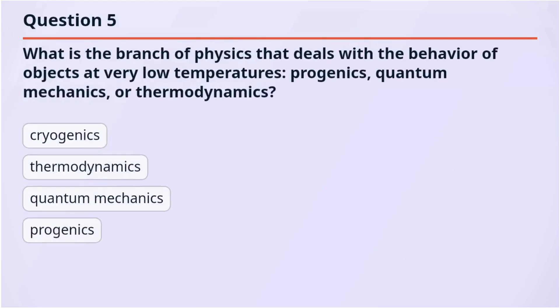Question 5. What is the branch of physics that deals with the behavior of objects at very low temperatures — progenics, quantum mechanics, or thermodynamics?